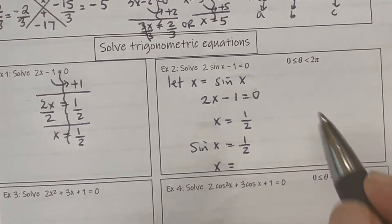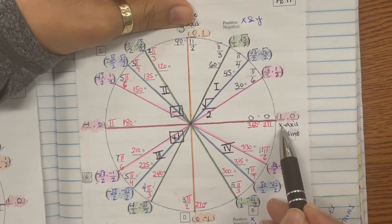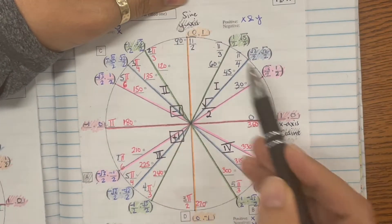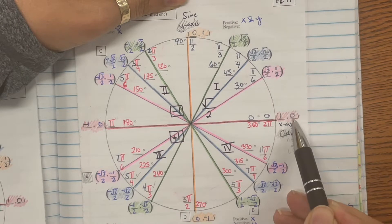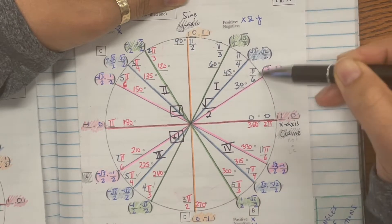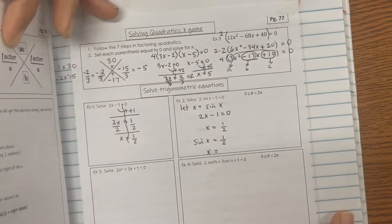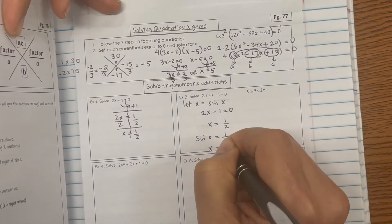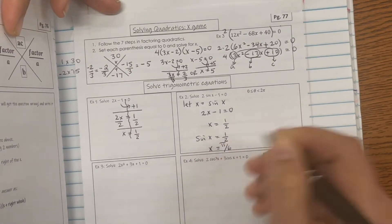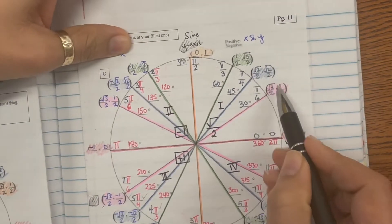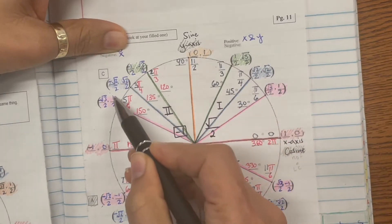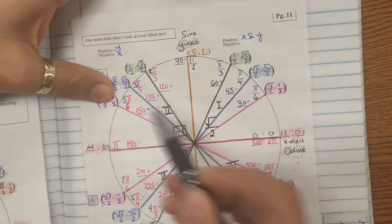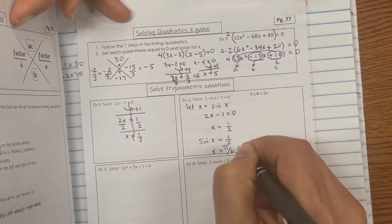This is only in one revolution because it says 0 to 2 pi. Cosine is the first coordinate, sine is the second. Looking at sine, there's 1 half at pi over 6. Keep going around the circle, looking for 1 half — there you go, 5 pi over 6.